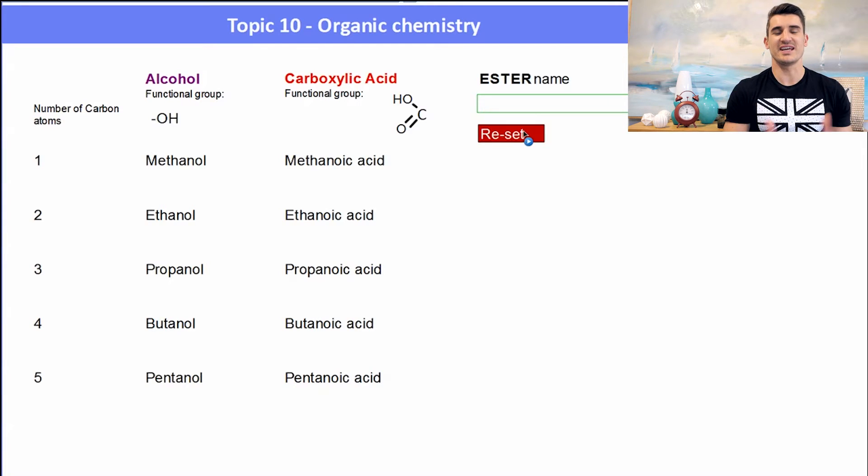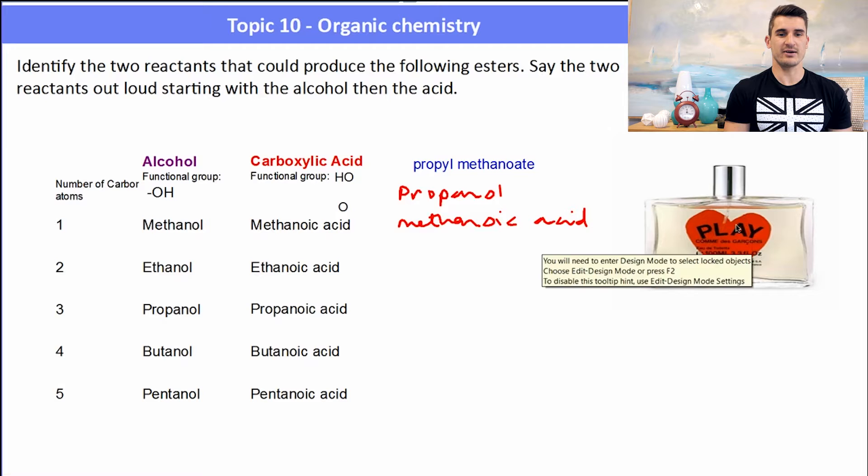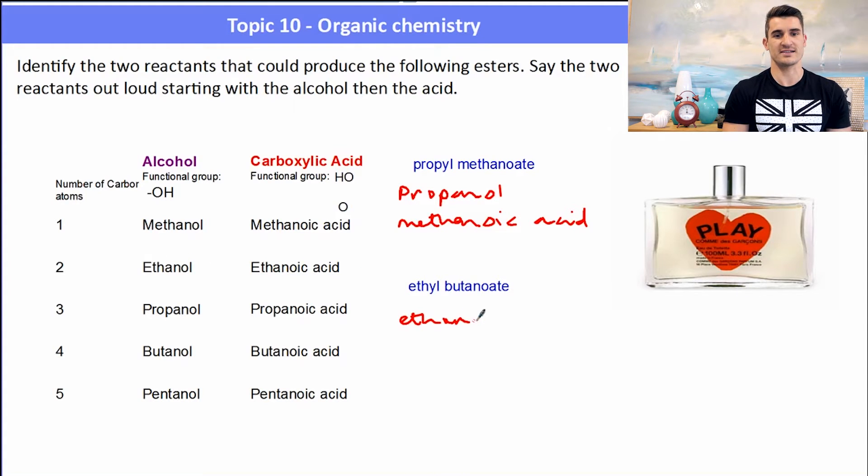Another thing that we might need to do is if we're given an ester, we might need to be able to work out what the two starting materials were. So what was the alcohol and what was the acid? So here's our ester propyl methanoate. So what was that made from? Well, it must have been made from propanol because propyl comes from the alcohol, and methanoic acid because the methanoate comes from the acid part. So propanol and methanoic acid. The next one: if we pull out our ester and it's called ethyl butanoate, what two things was that made from? Well, it must have been made from ethanol—that's where the ethyl comes from—and the butanoate, well that must have come from butanoic acid. So that ester has been made from ethanol and butanoic acid.